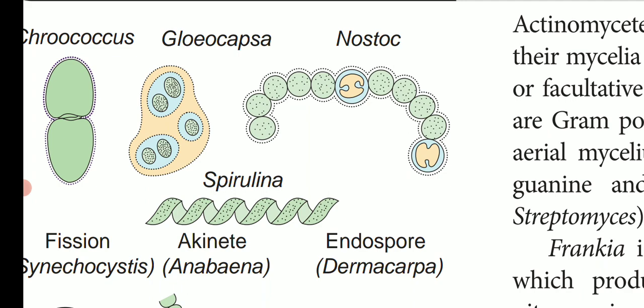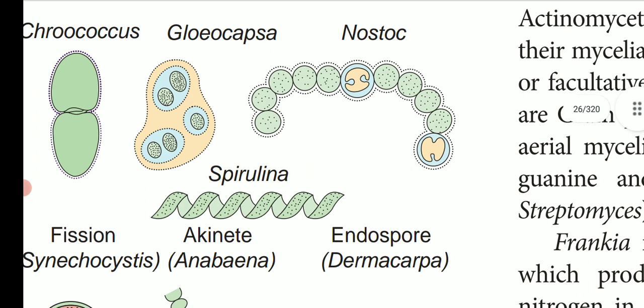The structure and reproduction in Cyanophyceae is shown in diagrams. Spirulina is rich in protein and is used as single-cell protein. Reproduction occurs by fission — the nuclear material divides first, then the cell divides into two daughter cells.